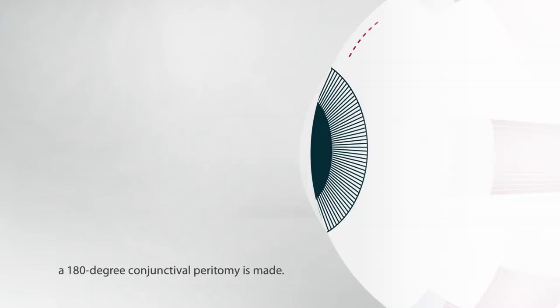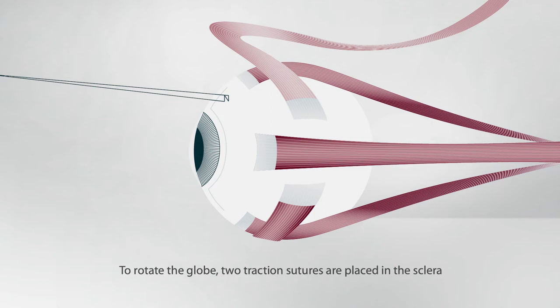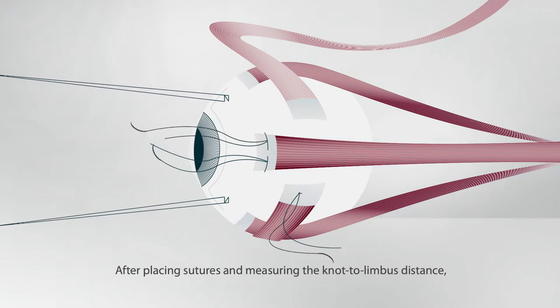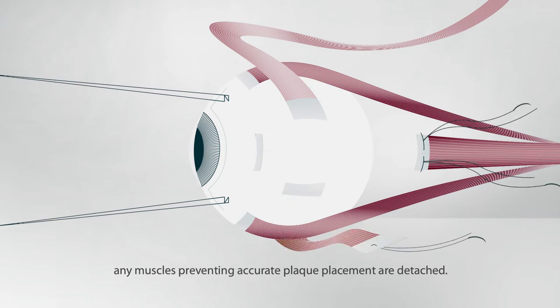During the operation, a 180-degree conjunctival peritomy is made. To rotate the globe, two traction sutures are placed in the sclera, about 4 mm from the limbus. After placing sutures and measuring the knot to limbus distance, any muscles preventing accurate plaque placement are detached. The inferior oblique muscle is only detached if it overlies the tumor. However, the superior oblique muscle is left in place because it is thin.